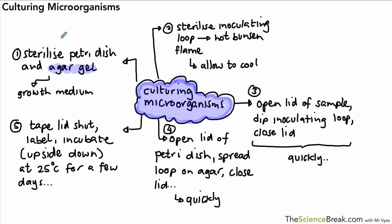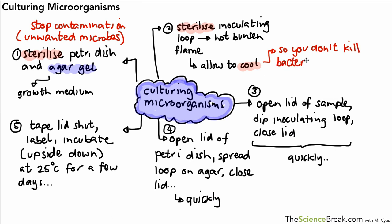We need to be able to explain why we do the different steps in this procedure. In terms of sterilizing the petri dish and the inoculating loop, that's really important because we want to avoid contamination. Contamination means the growth of unwanted bacteria. We need to grow the bacteria that we want and no others. Once we have heated the inoculating loop, we allow it to cool so that we don't kill the bacteria in our sample bottle.